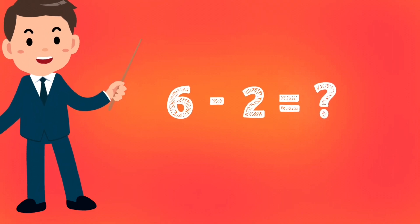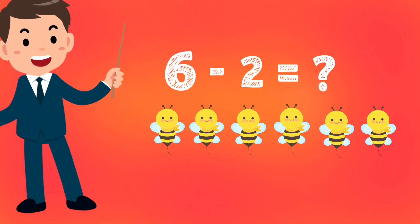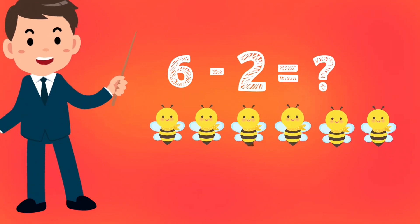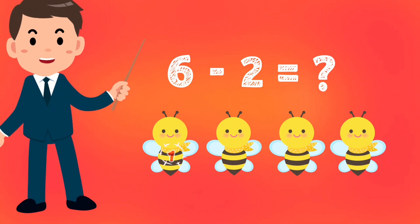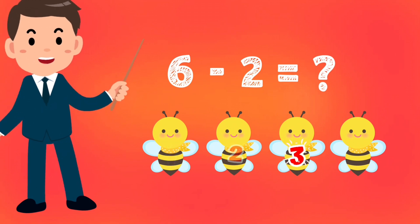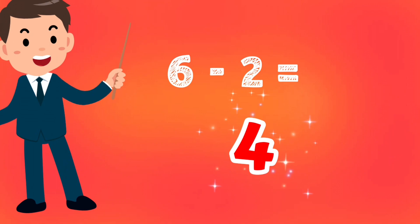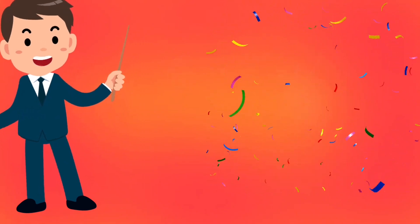Let's find 6 minus 2 equals how much. Six honey bees minus two honey bees. Let's count: one, two, three, four. The answer is four. Let's take one more example. One minus one equals how much?